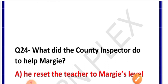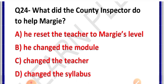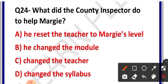Question number 24: What did the county inspector do to help Margie? Options: A. He reset the teacher to Margie's level, B. He changed the module, C. Changed the teacher, D. Changed the slavers. Correct answer is option A — he reset the teacher to Margie's level. Usne Margie ke level ke anusaar robot teacher ko reset kar diya tha, Margie ke level ke according chala diya tha.